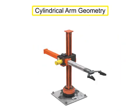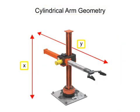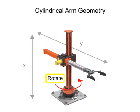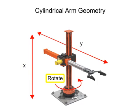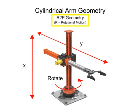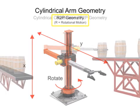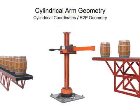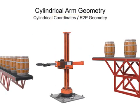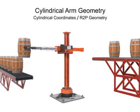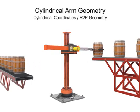Cylindrical arm geometry robots move linearly in two directions and rotate in one other. Since this type of robotic arm moves in two separate prismatic or linear directions and rotates in one direction, it's given the designation of R2P, where the R stands for rotational. This type of robotic arm is most often used in machine tending, assembly, material handling, and palletizing operations.